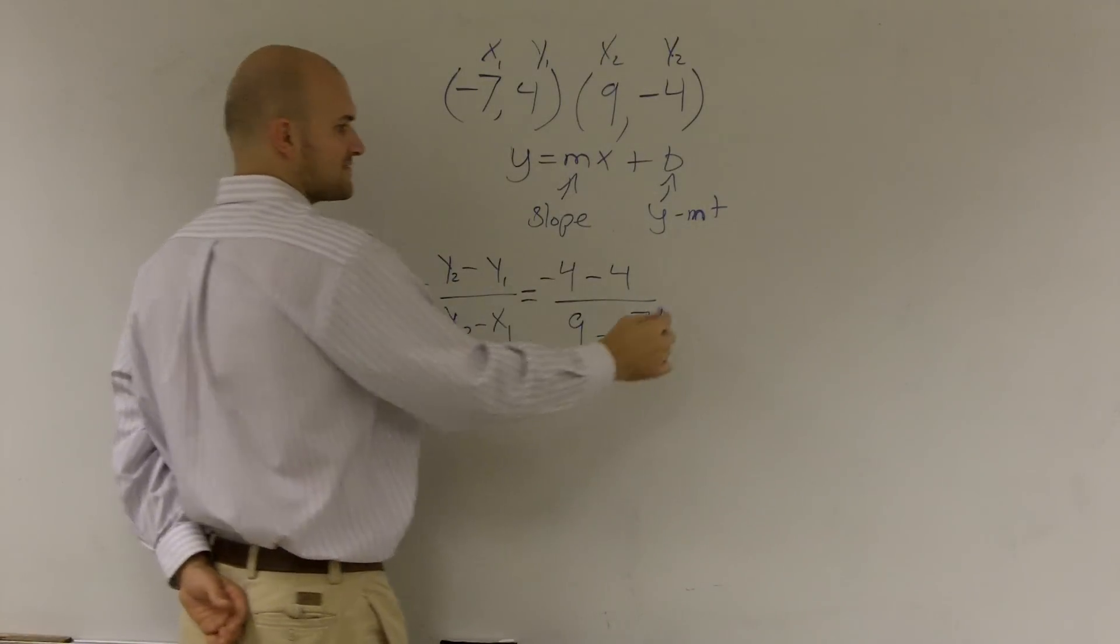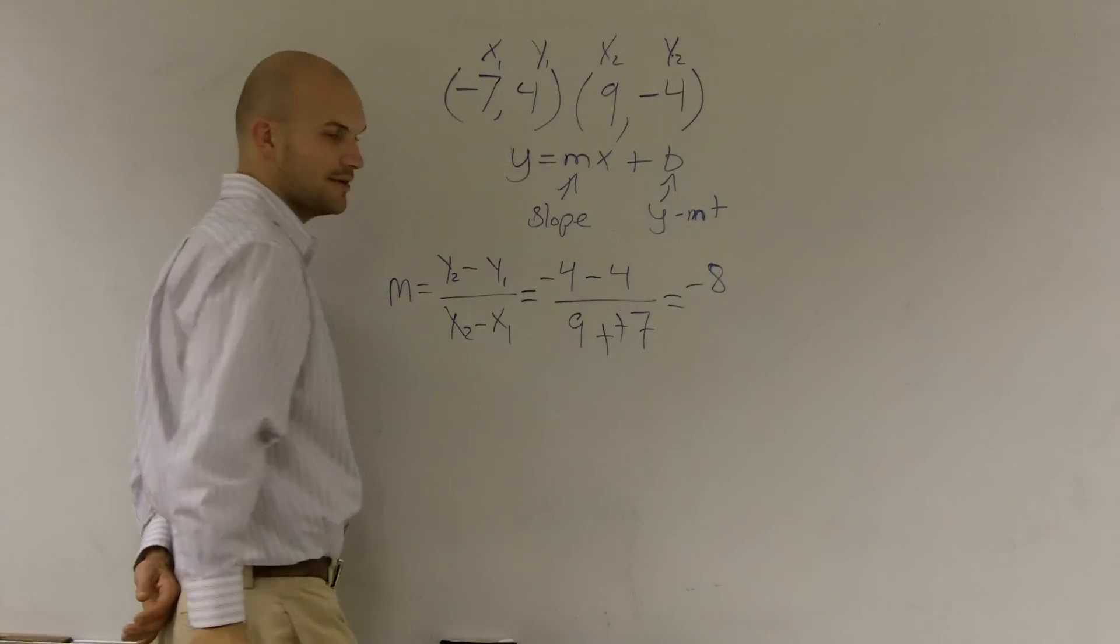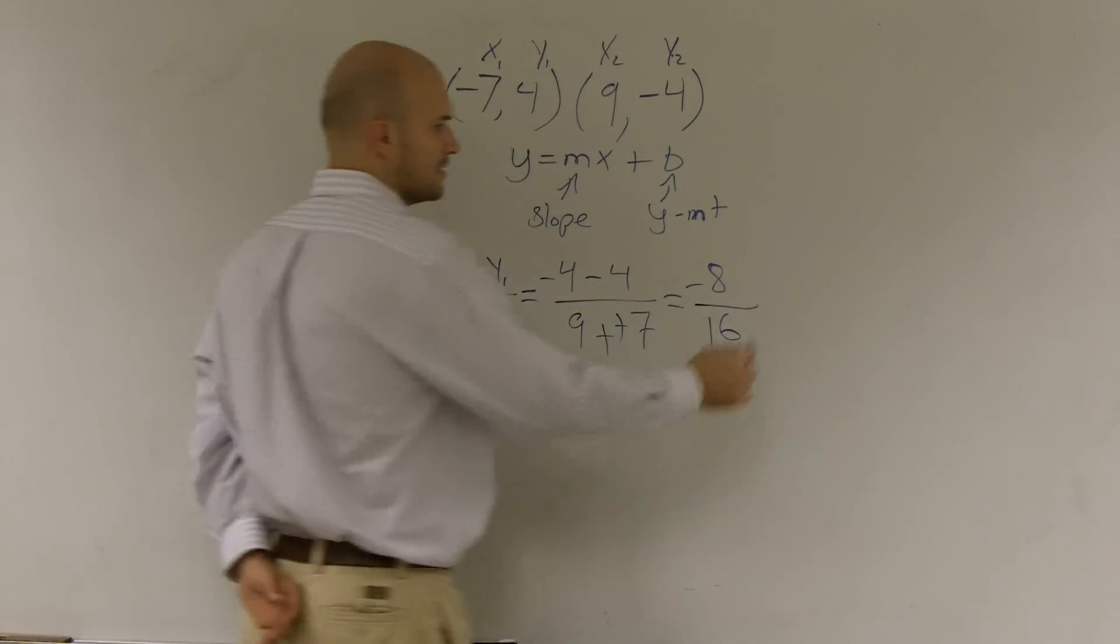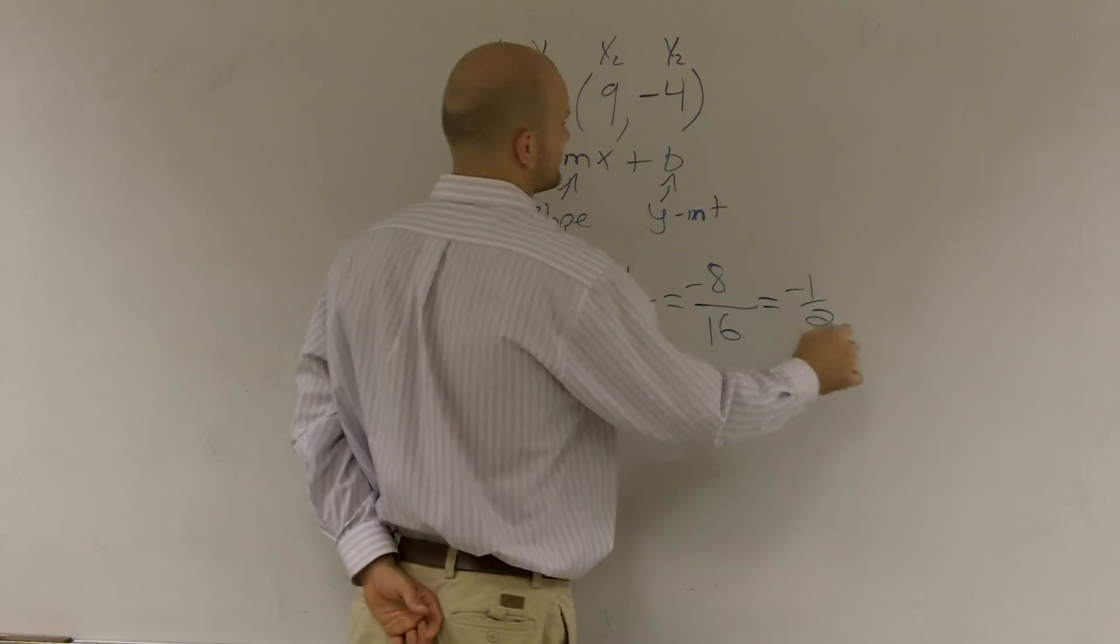Well, negative 4 minus 4 is negative 8. That becomes a double negative, which becomes a positive 16, which equals negative 1 half.